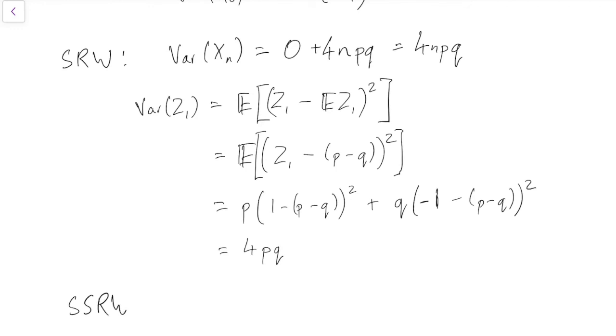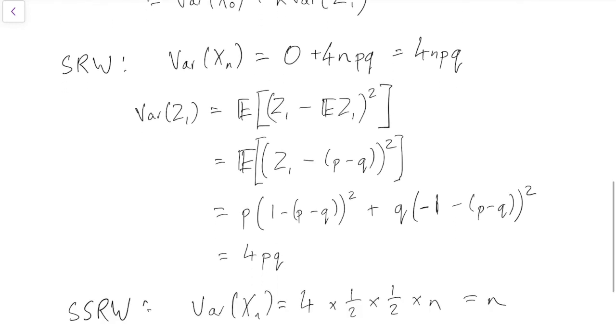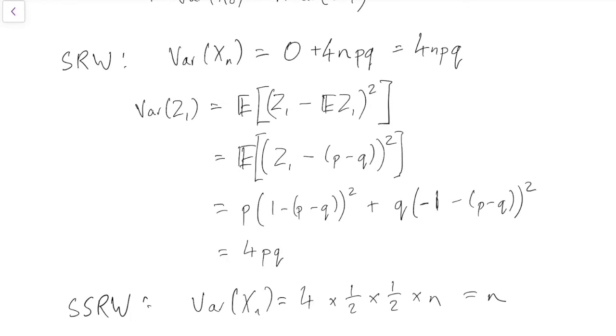Again, just for the sake of writing it down, the simple symmetric random walk, SSRW, simple symmetric random walk, where p equals q equals a half. And we have variance of Xn equals 4 times p times q times n. And the two halves cancel out with the 4, and we just get n. It's kind of a nice expression. So again, we can calculate the variance of any random walk, including the simple random walk, and including especially the simple symmetric random walk.